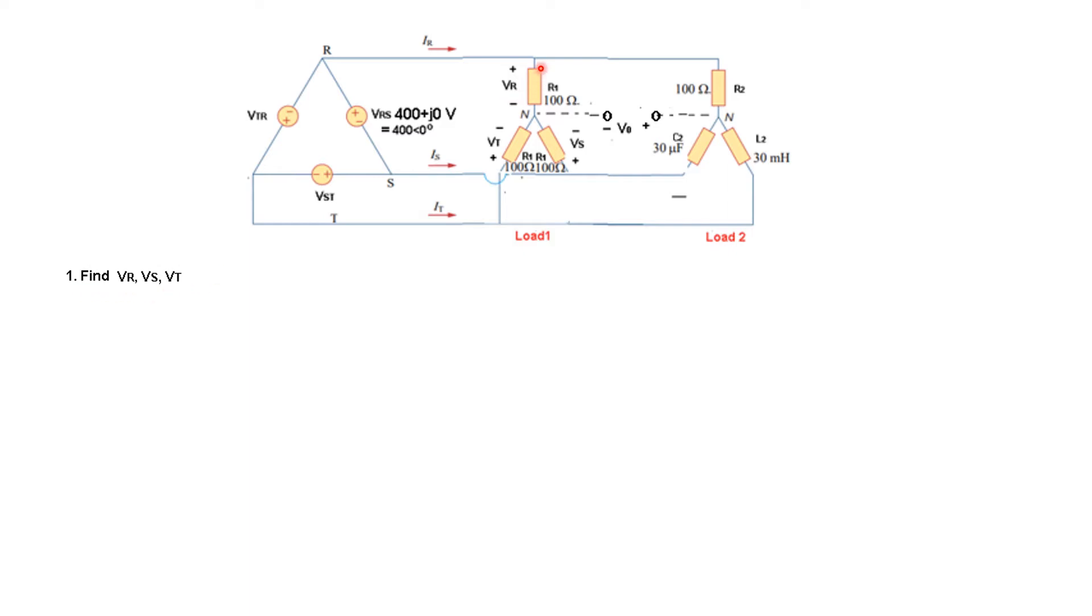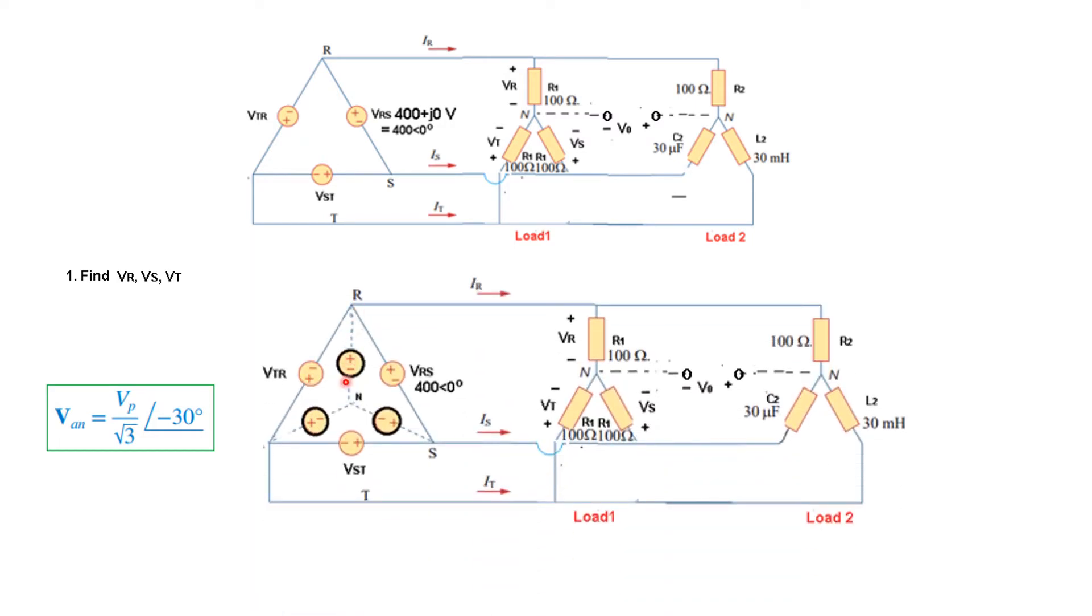To get these voltages, the load is Y-connected but the source is Delta connected. First, we will convert the source into Y-connected. If you recall from the previous lecture, for Delta to Y conversion we use this formula: VP divided by root 3, then add an angle of minus 30 degrees. This is how the Y connection will look when we convert it from Delta.